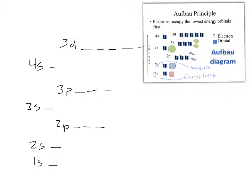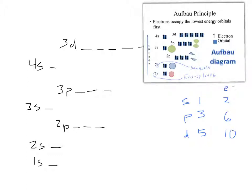D sublevels have five orbitals. S always has one orbital, P's always have three orbitals, and D's always have five orbitals. So how many electrons can fit in the S sublevel? Two — because two for every orbital. How many electrons can fit in the P sublevel? Six. How many electrons can fit in the D sublevel? Ten. So this is a chart of the number of electrons, the orbitals, and the sublevel.